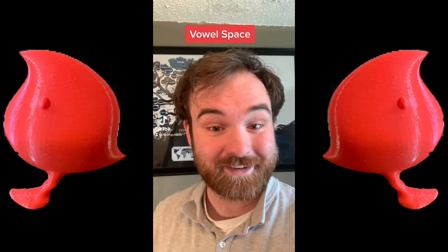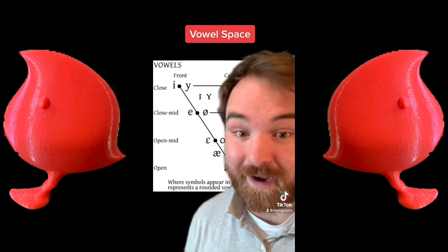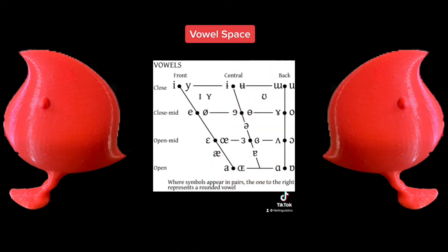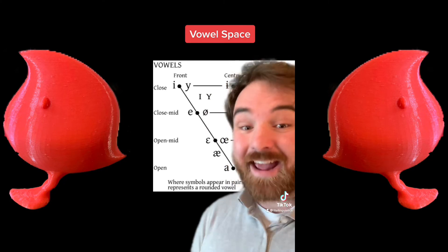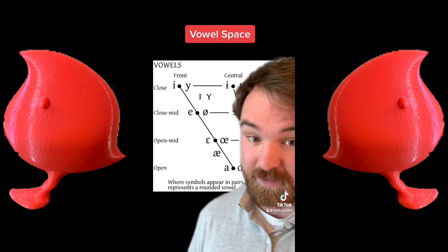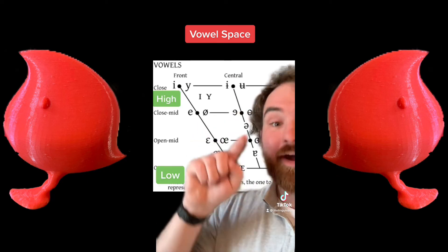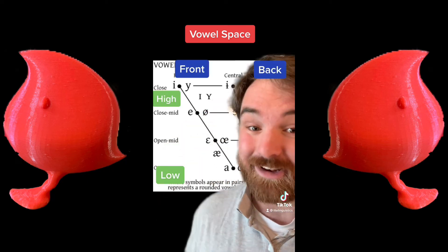Let's talk about vowels. Vowels, like many things, exist on a spectrum. Here is a chart of the vowels in the International Phonetic Alphabet — as you can see, there's a lot. This area, known as the vowel space, has two main dimensions: high to low and front to back, which correspond to areas in your mouth.